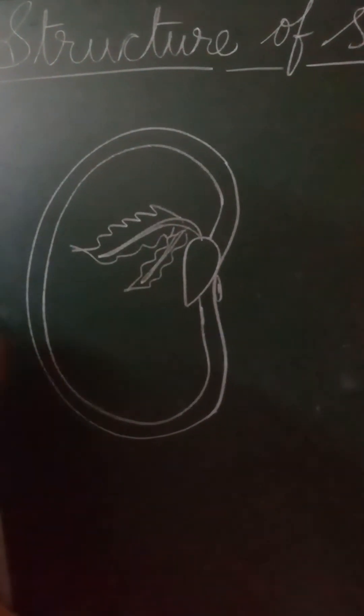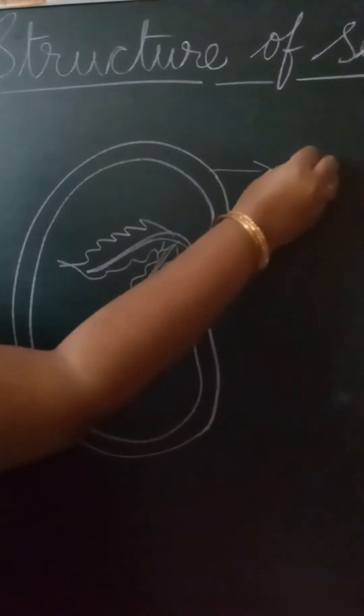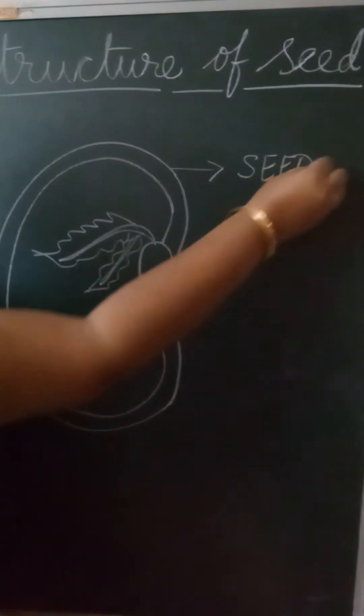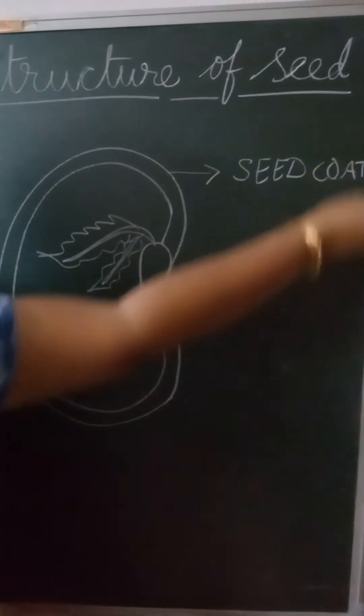Let us label the parts. The outer part we call it as seed coat. S-E-E-D-C-O-A-T. Seed coat.